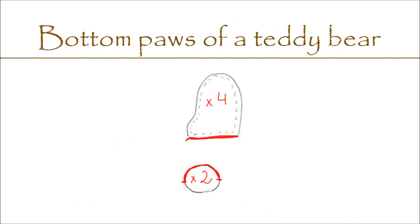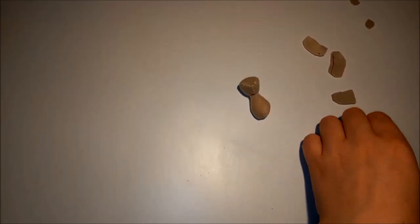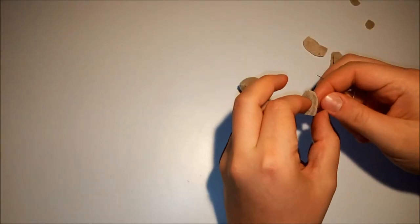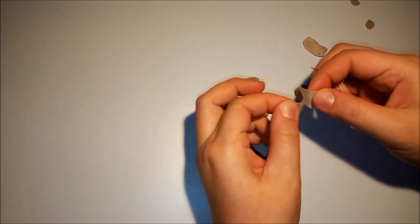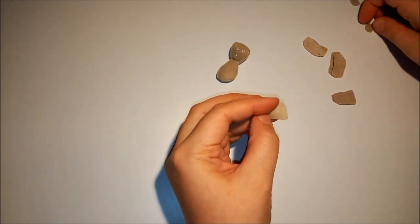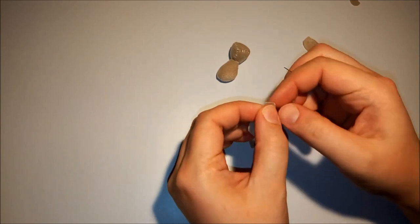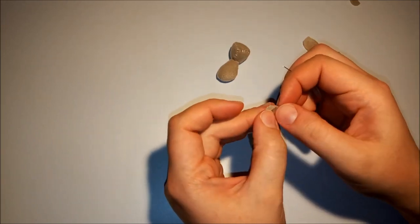The lower paws consist of two parts. The sides of the paws we cut four times and the soles cut twice. We connect the soles with two sides and we sew together.